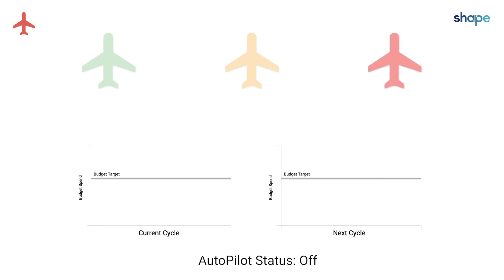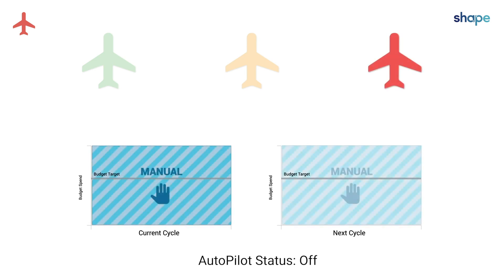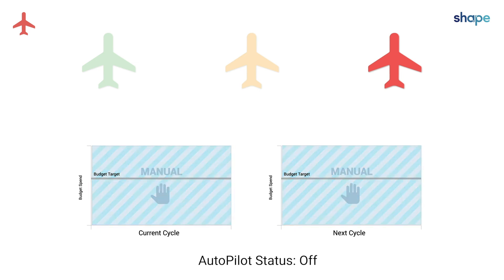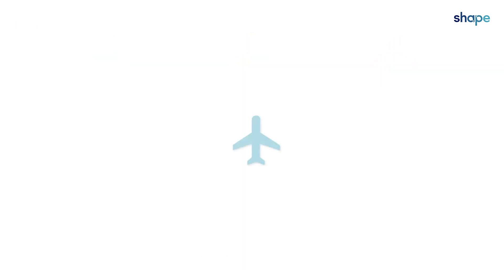The Off status prevents Autopilot from changing campaign status, giving you full manual control of the campaign. Now you know the basics of Autopilot and are ready to automatically control advertising spend.